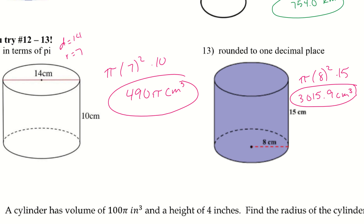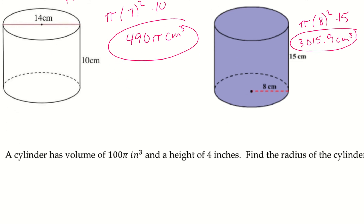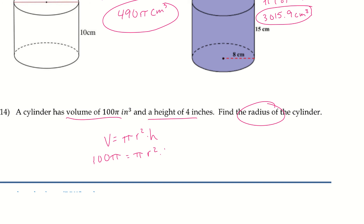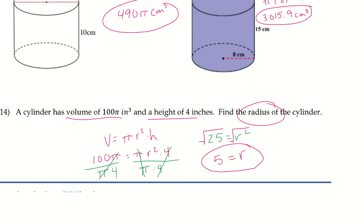Let's look at example fourteen. A cylinder has a volume of 100π and a height of 4 inches — find the radius. Using V = πr²h: 100π = π × r² × 4. Dividing both sides by 4π cancels pi on both sides, leaving 100 ÷ 4 = 25 = r². Taking the square root gives r = 5 inches.